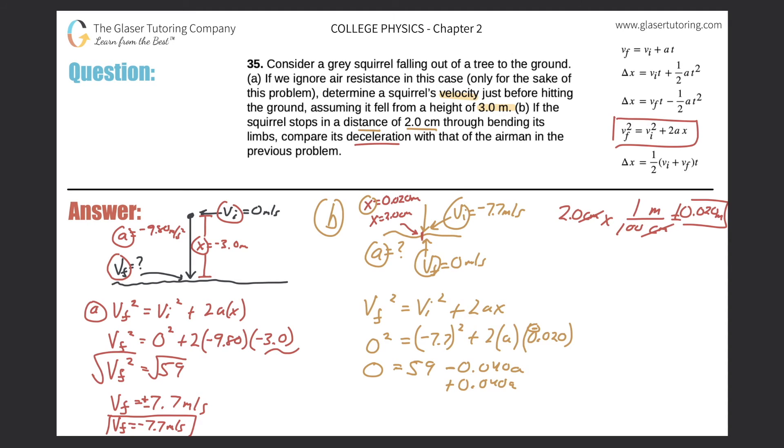Let's add the acceleration on over. 0.040a is equal to 59. And divide this out now. 0.040. So a is 59 divided by 0.040. Two significant figures. My acceleration will be 1.5 times 10 to the 3 meters per second squared. That's the acceleration of the squirrel.